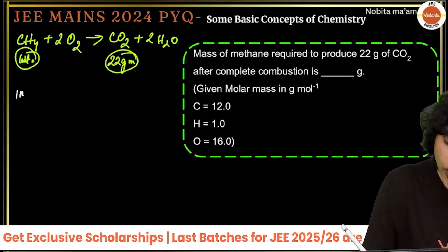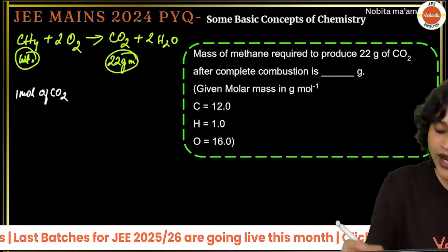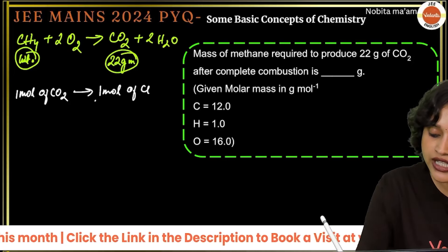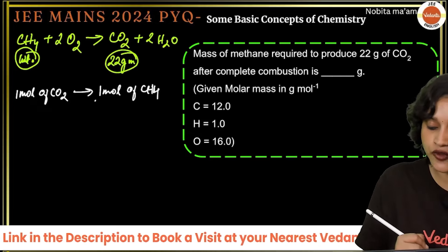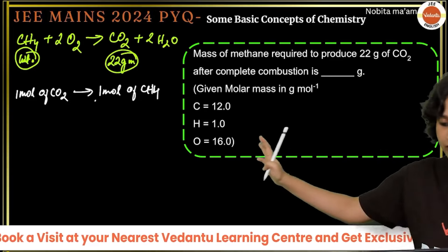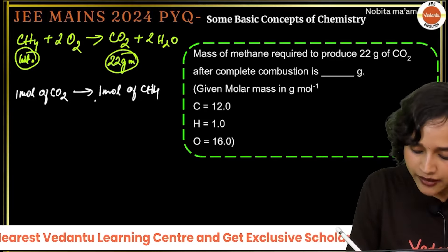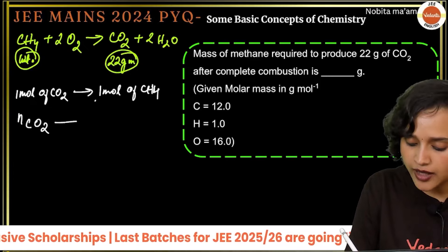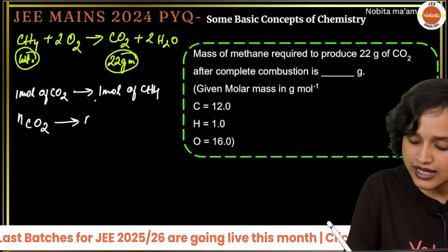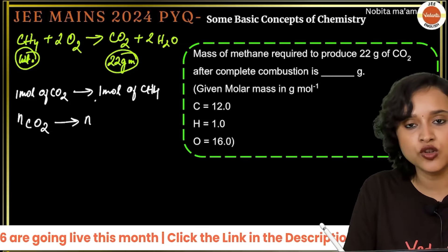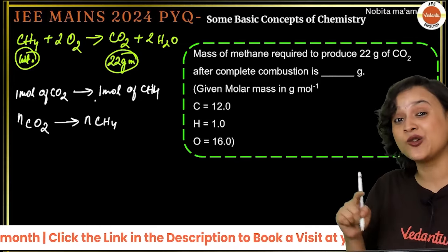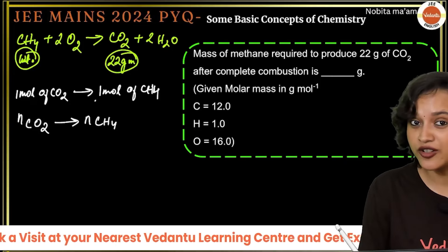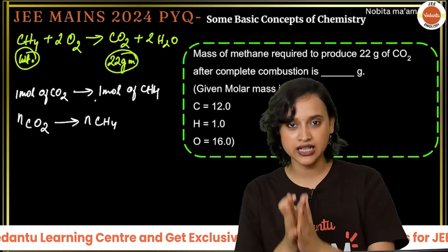From the balanced equation, 1 mole of CH₄ is consumed to produce 1 mole of CO₂. So the number of moles of CO₂ produced equals the number of moles of CH₄ that undergoes combustion. Number of moles = given mass divided by molar mass.